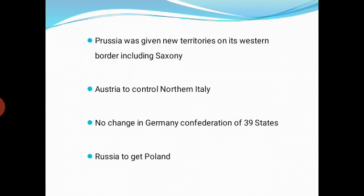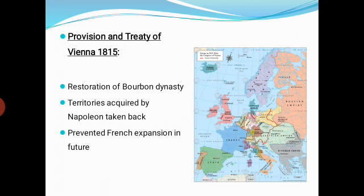The fifth provision: Austria was given control of northern Italy, so Italy including Austria under the Treaty of Vienna 1815. Next, there was no change in the German Confederation of 39 states, which had been set up by Napoleon Bonaparte — these 39 states remained as they were. Finally, Russia was given Poland — Poland was included within Russian territory.